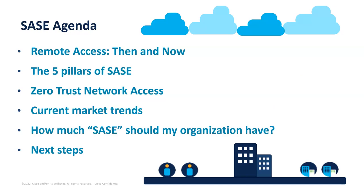I'm going to discuss then and now - how did we get here, why is this even important? Five maybe ten years ago this wasn't really a thing; now it's perhaps one of the most talked-about topics from a cybersecurity standpoint. We'll cover the five pillars as defined by Gartner, zero trust network access, some market trends - SASE three or four years ago was overhyped but I think it is real today - and finally how should you apply this to your organization. Almost all organizations have some version of this, but SASE is definitely shades of gray.